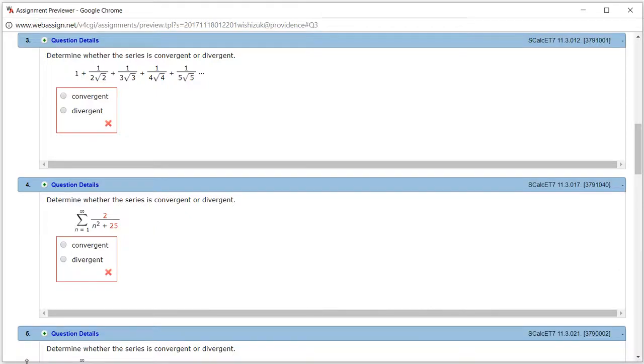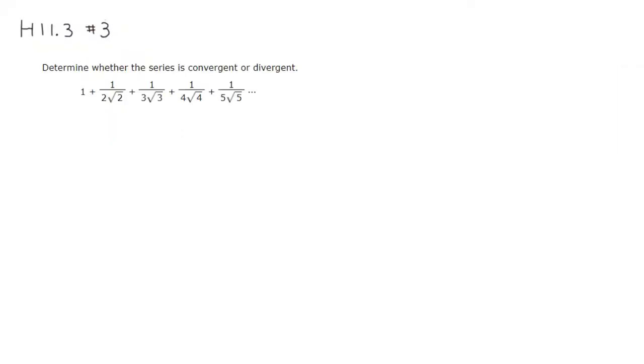Let's look at homework 11.3, problem number 3. So we have this series, and I think we're going to try to rewrite it so that it fits the format 1 over 1 times square root of 2... no, square root of 1, sorry.